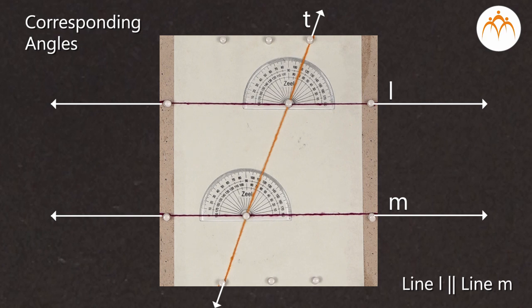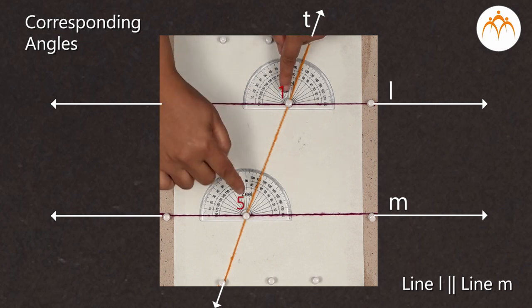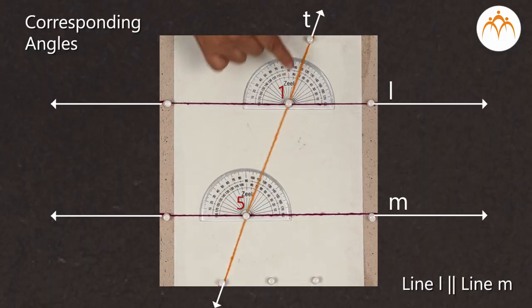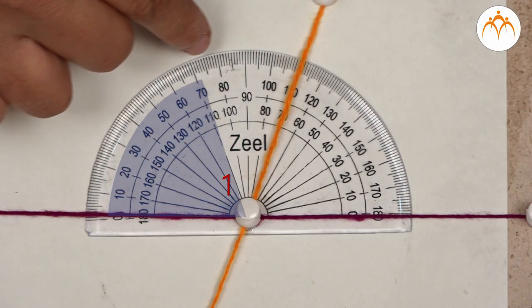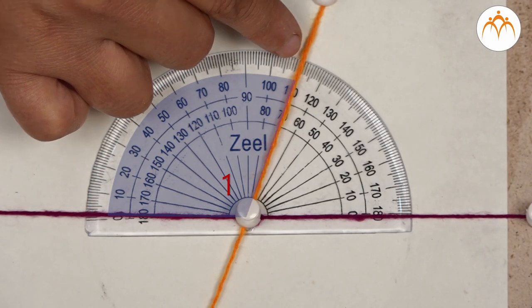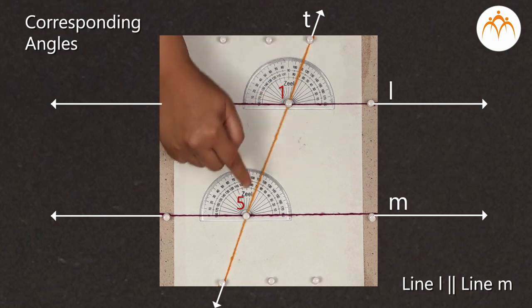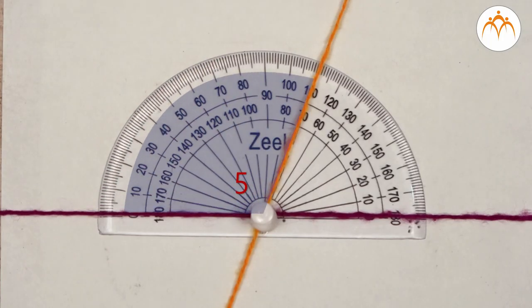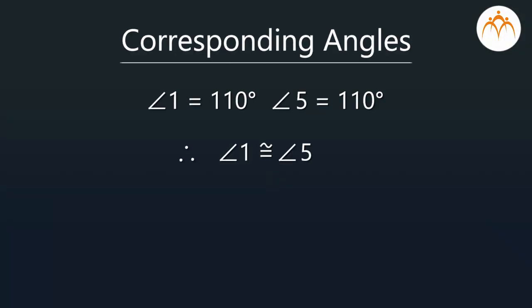Let us measure angle 1 and angle 5 with a protractor. Angle 1 measures 110 degrees. Angle 5 also measures 110 degrees. Thus, the measure of angle 1 is equal to angle 5, so we can say that angle 1 and angle 5 are congruent to each other.